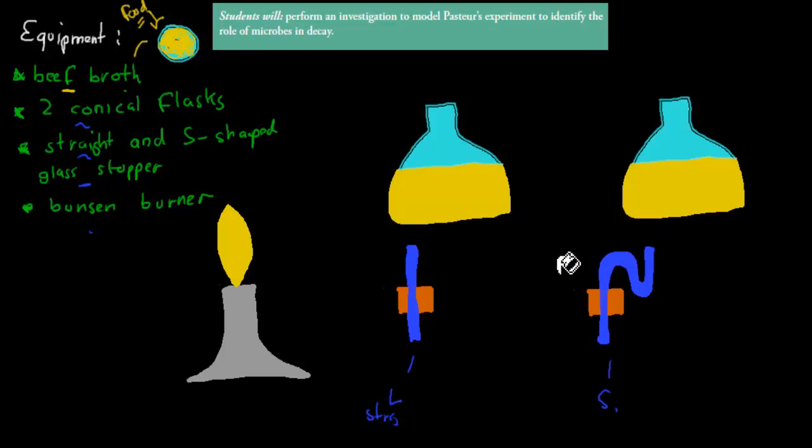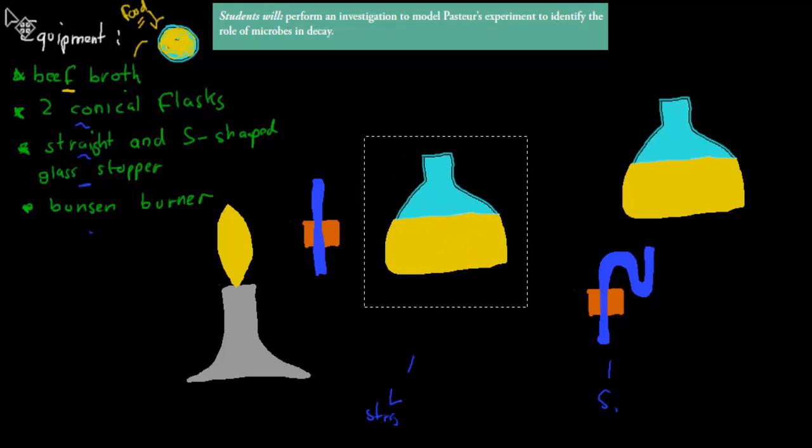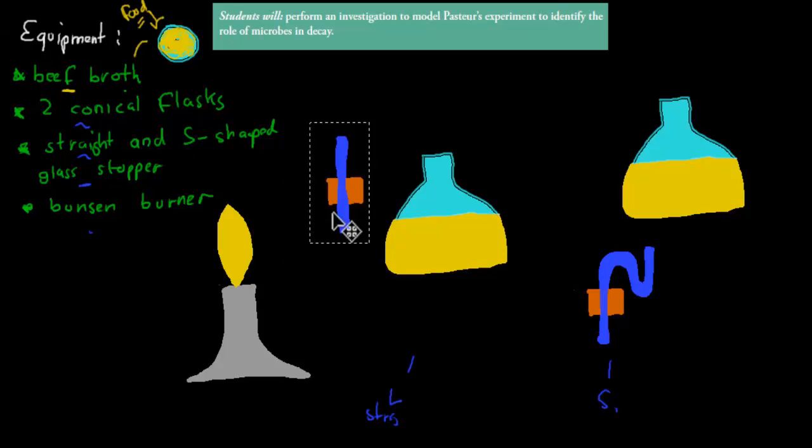What you do next is you simply put both these stoppers onto the flasks. This one will go on one of the flasks, and the other one will go on the other one.